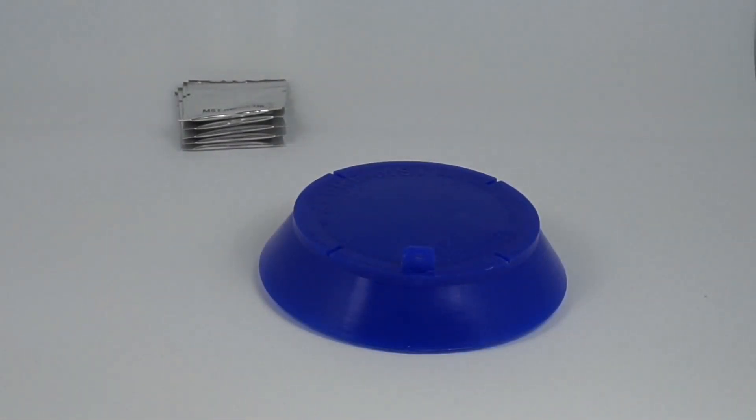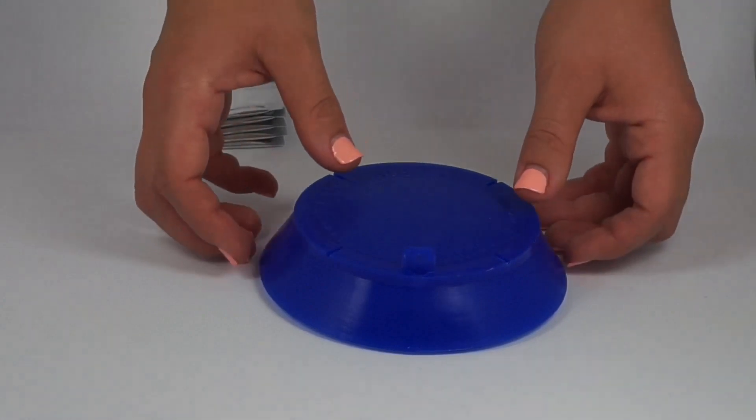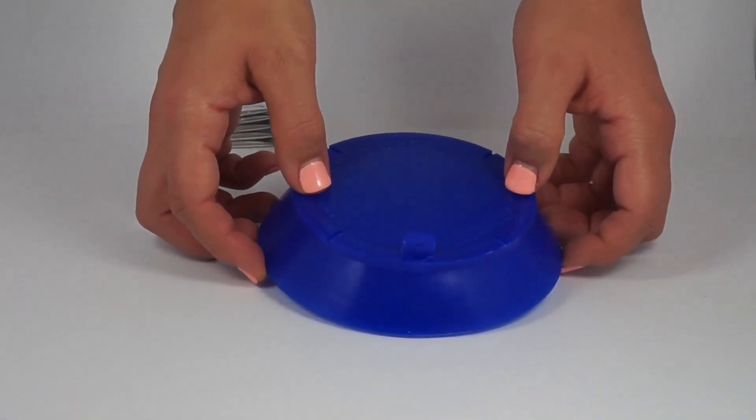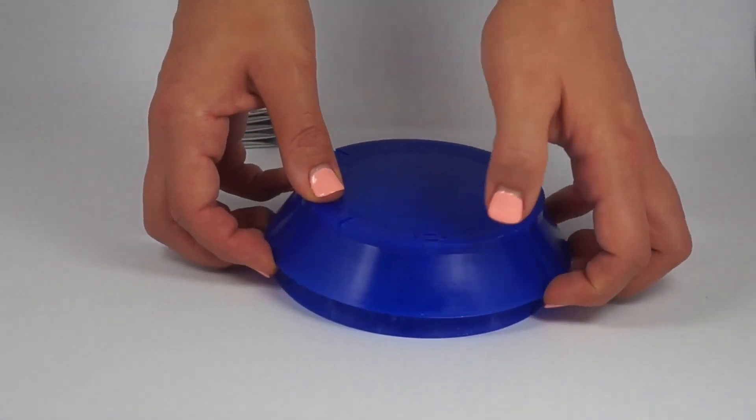If you need to remove the lid to monitor the progress of the trap's catch, you simply push down on the tether hook and the lid will come away from the base.